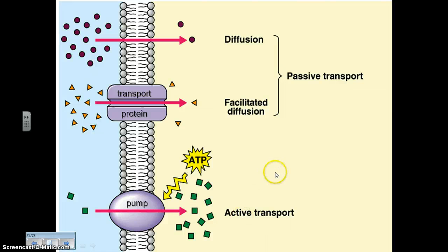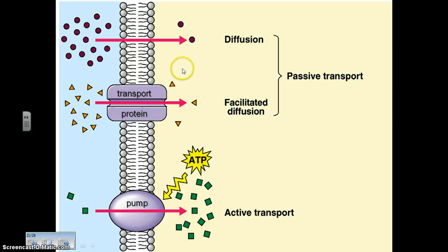The diagram here summarizes the transport mechanisms we've already studied. We have diffusion, where particles are moving across the cell membrane through that hydrophobic region from high concentration to low concentration. The particles that can't make it through the membrane then have to bridge that gap using a transport protein.